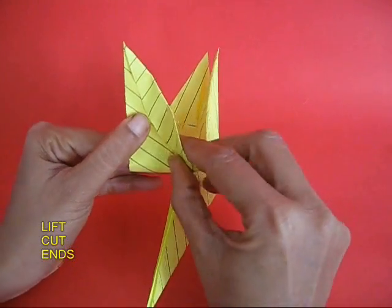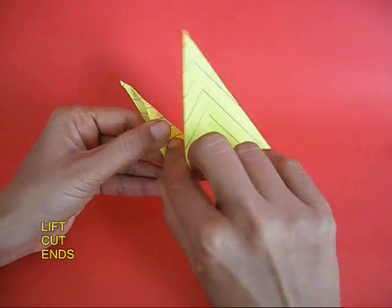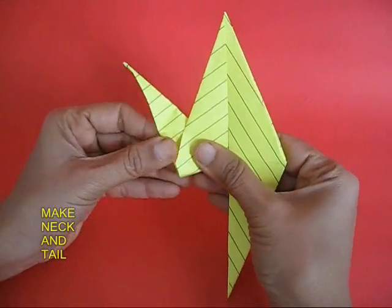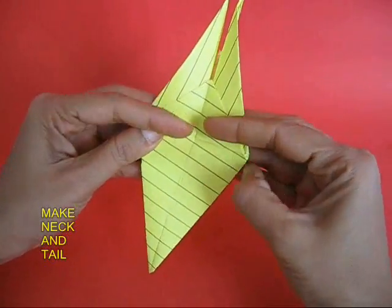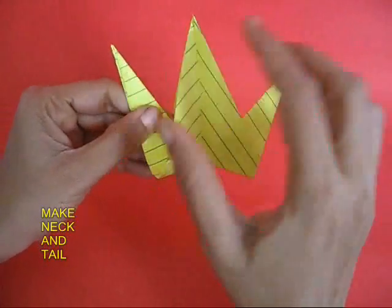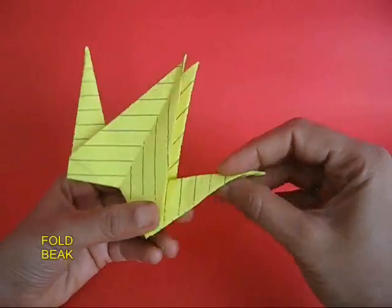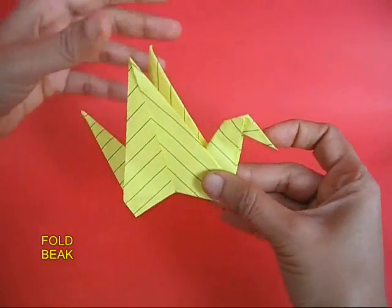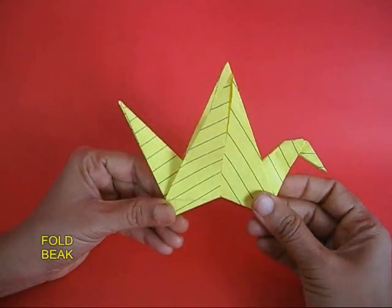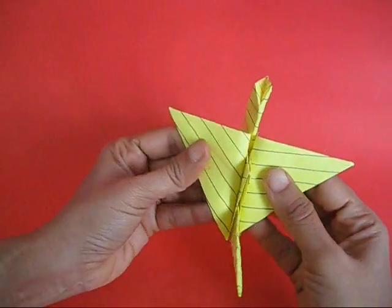Now lift one of the ends in the middle of the wings to make the neck and the beak. Similarly lift the other piece between the two wings to make the tail of the bird. Fold a small beak and put a black dot for the eye.